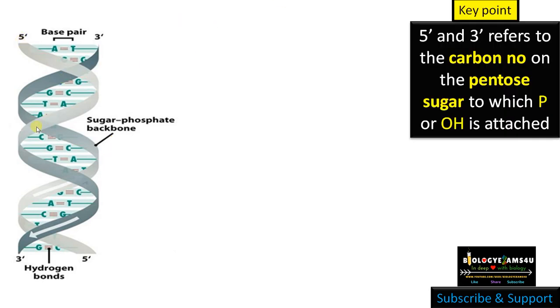This is the double-stranded DNA helix. As you can see, the first strand, the upward position is denoted as 5 prime, whereas in the second strand the upward position is denoted as 3 prime. The most important point is the 5 prime and 3 prime refers to the carbon number on the pentose sugar to which phosphate or hydroxyl group is attached.